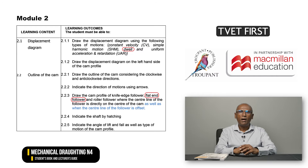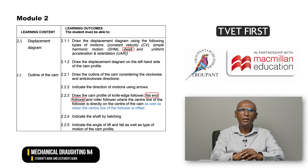Are there any other changes to know about? In Module 2 on CAM profiles, dwell motion is included among the list of displacement diagrams that need to be drawn. In addition to knife edge and roller followers, students must now also draw the CAM profile of flat-end followers.